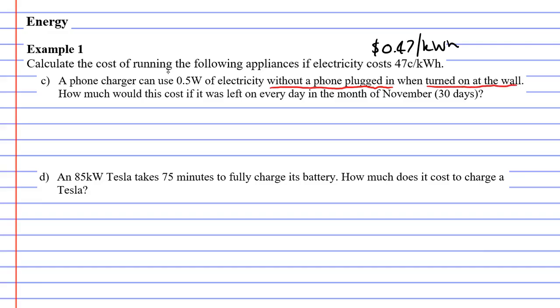So what that means is, your charger is in the wall, it's turned on, but the phone is not plugged in. So even though the phone's not plugged in, you are still using electricity. Now let's see how much this costs you. The question is telling you to imagine that you leave it on every day in the month of November. So we're going to leave it on every day for 30 days.